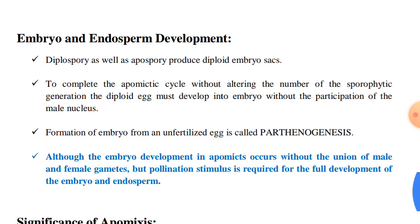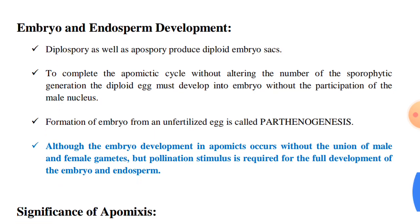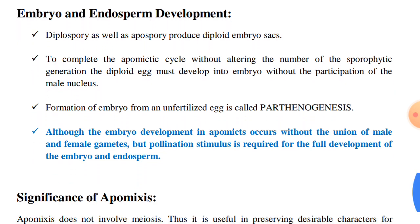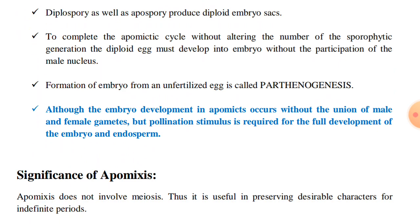Now, embryo and endosperm development. Diplospory as well as apospory produce diploid embryo sacs. To complete the apomyctic cycle without altering the number of the sporophytic generation, the diploid egg must develop into an embryo without the participation of the male nucleus. Formation of embryo from an unfertilized egg is called parthenogenesis. Although embryo development in apomyxis occurs without the union of male and female gametes, pollination stimulus is required for the full development of the embryo and endosperm.